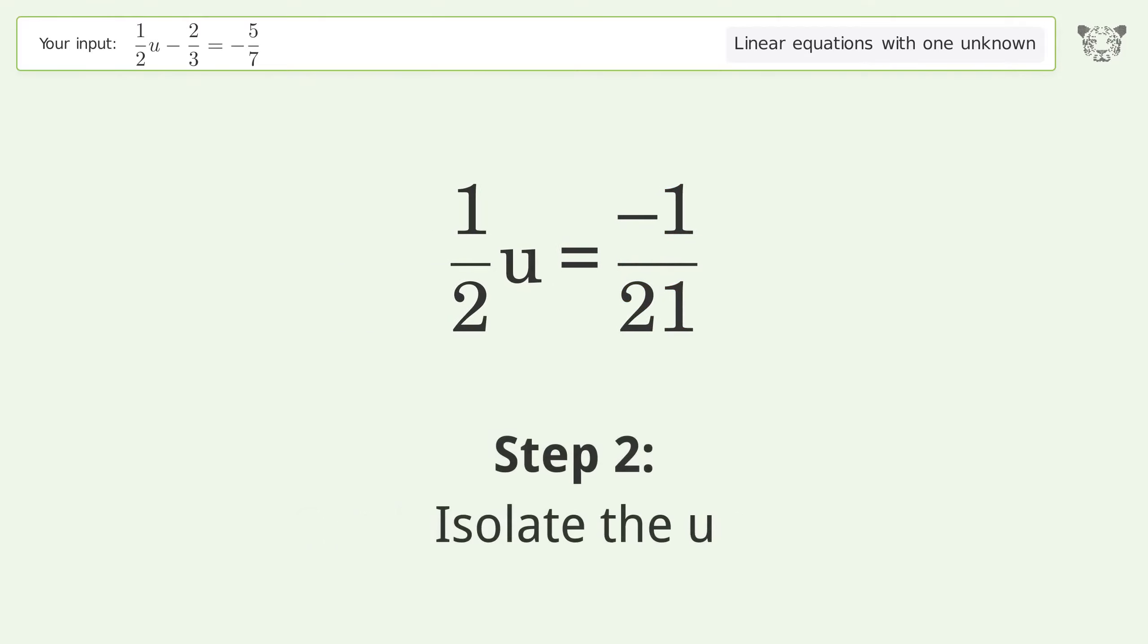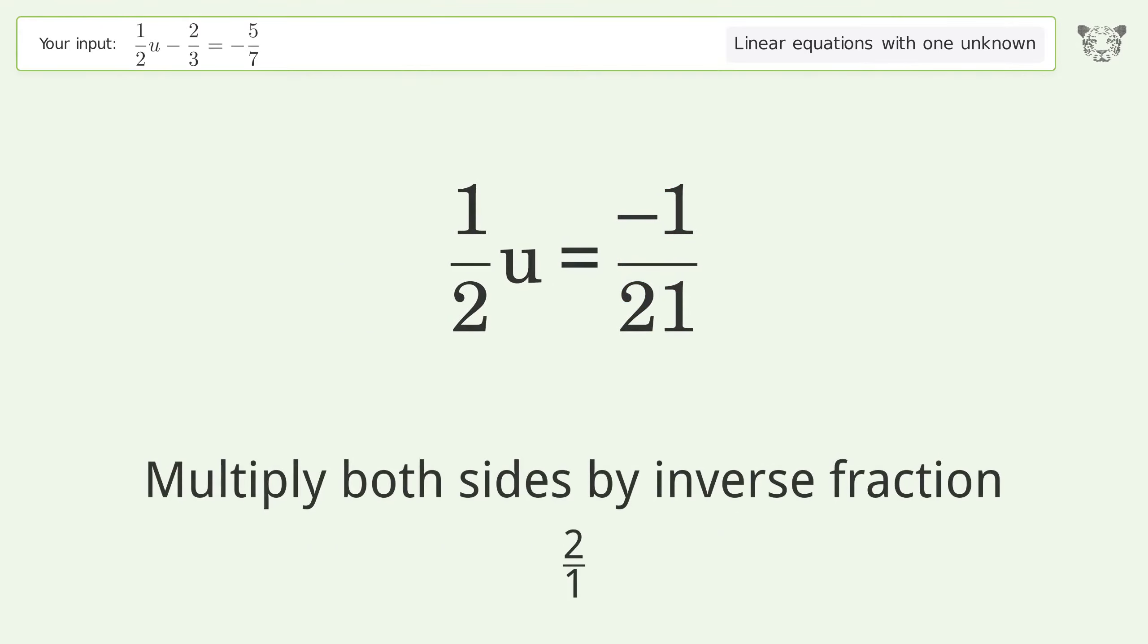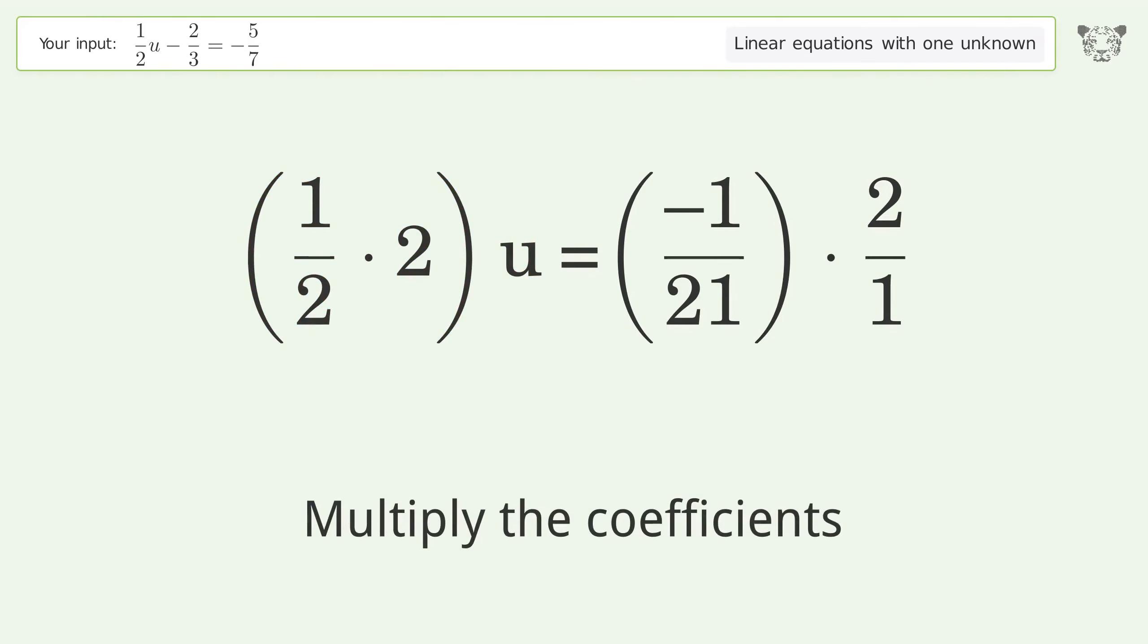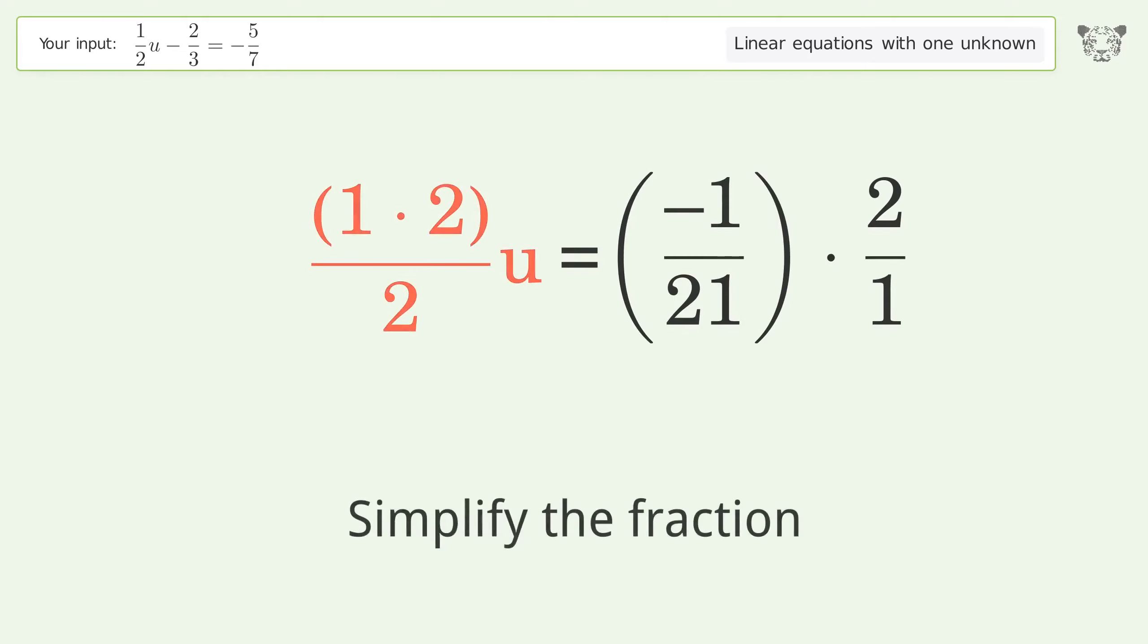Isolate the u. Multiply both sides by inverse fraction 2 over 1. Group like terms. Multiply the coefficients. Simplify the fraction.